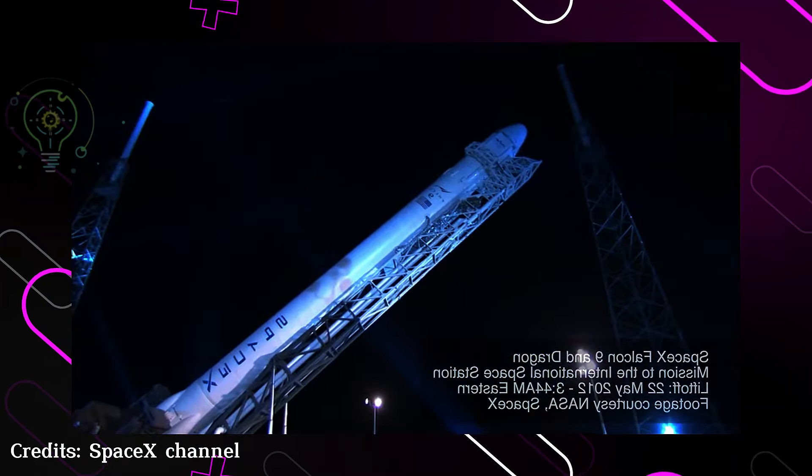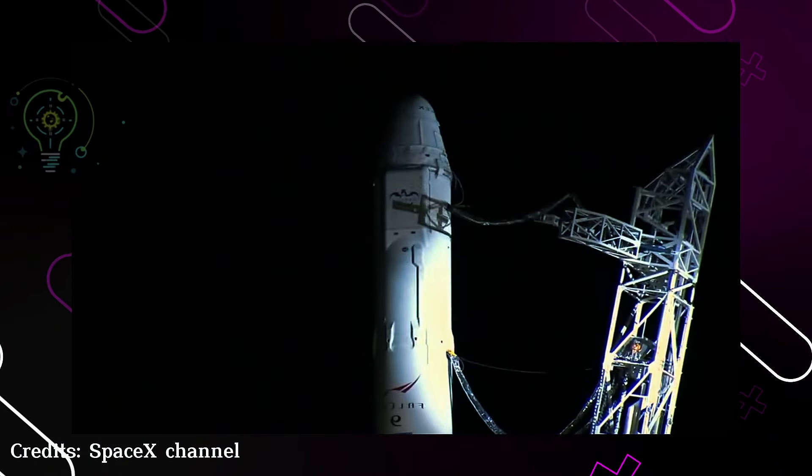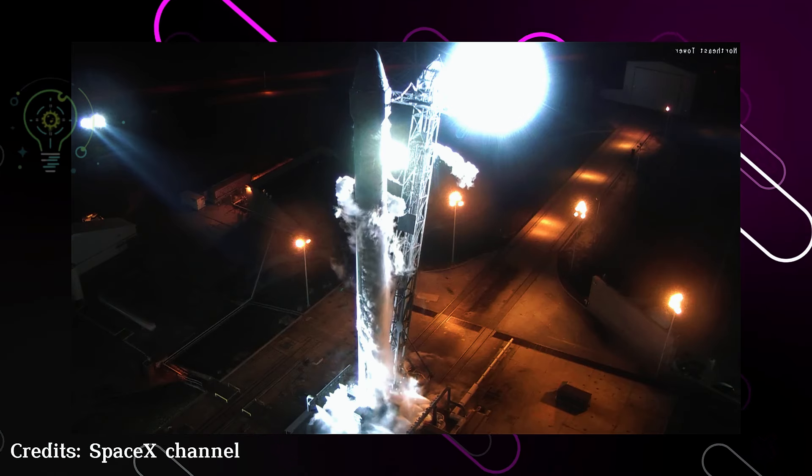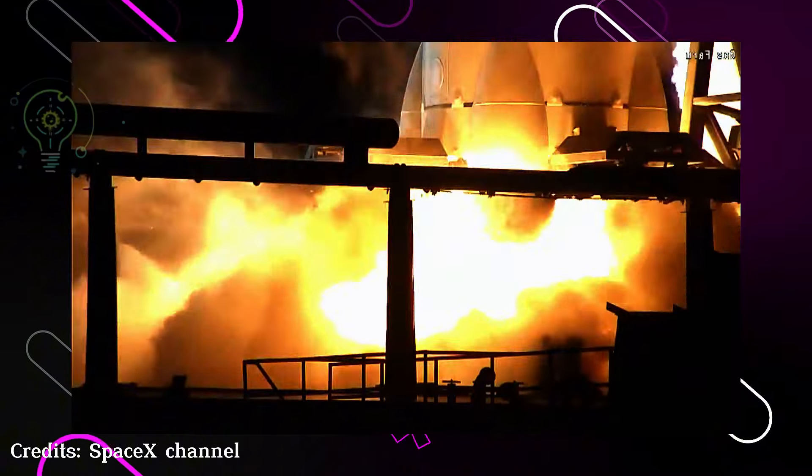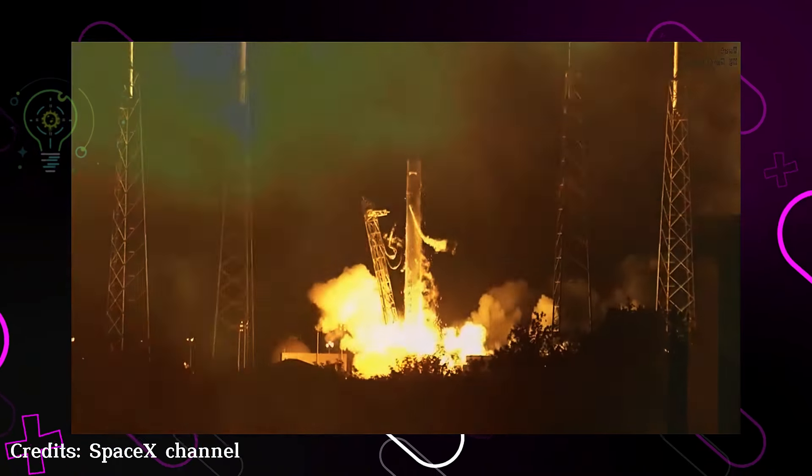Number six: Dragon 1. In 2010, the Dragon 1 capsule came into play, becoming essential for delivering supplies to the International Space Station, ISS. This was the start of SpaceX's partnership with NASA and solidified the company as a reliable supplier to the ISS.